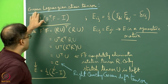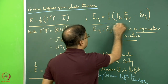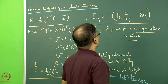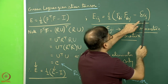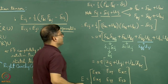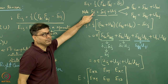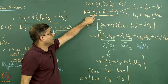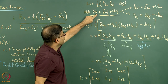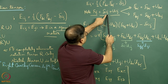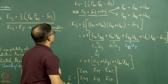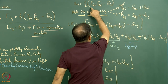Expanding E_ij in more detail: E_ij = ½(F_ki·F_kj − δ_ij). Since F_ij = δ_ij + u_ij, we can write F_ki = δ_ki + u_ki and F_kj = δ_kj + u_kj. Substituting and expanding, the δ_ki·δ_kj term gives δ_ij, which cancels the −δ_ij. After simplification, three terms remain: E_ij = ½(u_ij + u_ji + u_ki·u_kj).